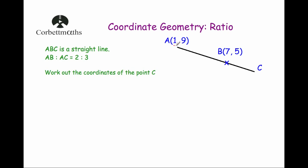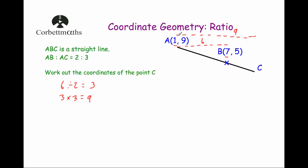To get from A to B horizontally we go 6 across, because from 1 to 7 is 6. Now for the whole distance from A to C — since AB to AC is 2 to 3, this line is two parts and the whole line is three parts. So 6 divided by 2 is 3, and 3 times 3 is 9. The length of the whole line is 9, so starting at 1 and going across 9, the x-coordinate of C is 10.